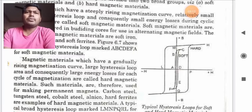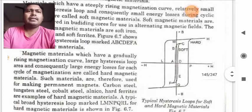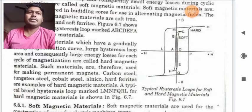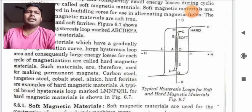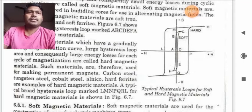A typical broad hysteresis loop marked LMNPQRL. So here again you can note that L is the starting of the loop and L is again the end of the loop and the loop is LMNPQRL. For a hard magnetic material is shown in the figure 6.7.